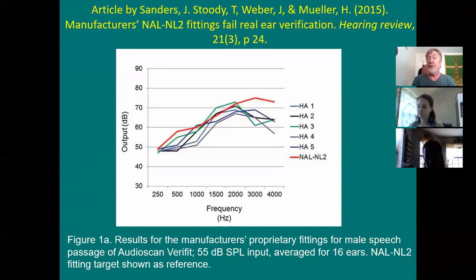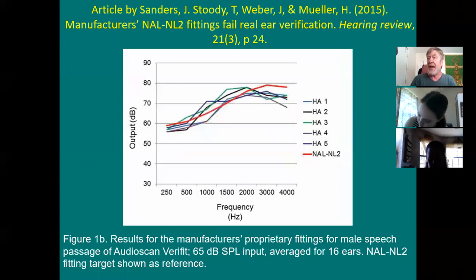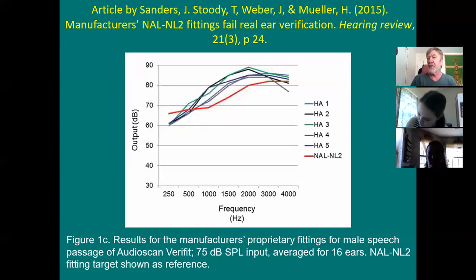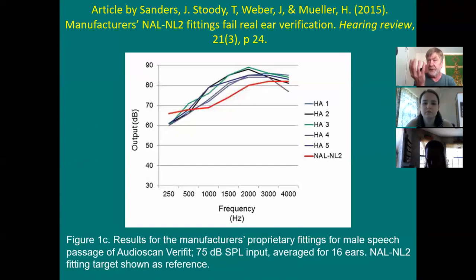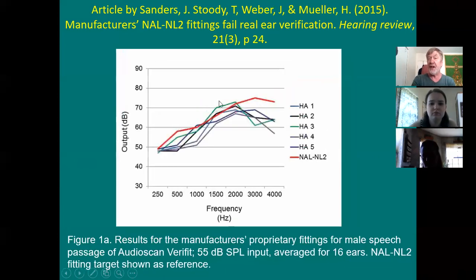Look at how they compare. Notice how they roll off the highs — the targets are all below NAL-2, especially in the highs. When we look at 65 dB SPL inputs — average — they're closer to NAL-2, pretty good, fairly close. But when you look at what they prescribe for 75 dB inputs, they ask for more than NAL-2. So proprietary fitting methods are almost acting like the hearing aid is linear — giving almost the same amount of gain for soft, average, and loud. Whereas compression gives less and less gain as inputs go up.